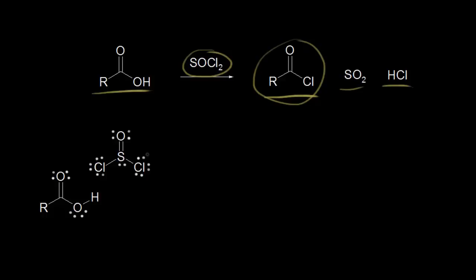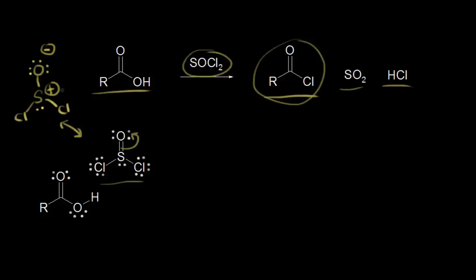Let's look at the structure of thionyl chloride. Here we have the dot structure. We could draw a resonance structure by showing these electrons moving off onto the oxygen. Our oxygen would now have three lone pairs of electrons, giving it a negative one formal charge. Our sulfur would still be bonded to the chlorines, still have a lone pair of electrons, and would get a plus one formal charge. So this is a major contributor to the overall structure.